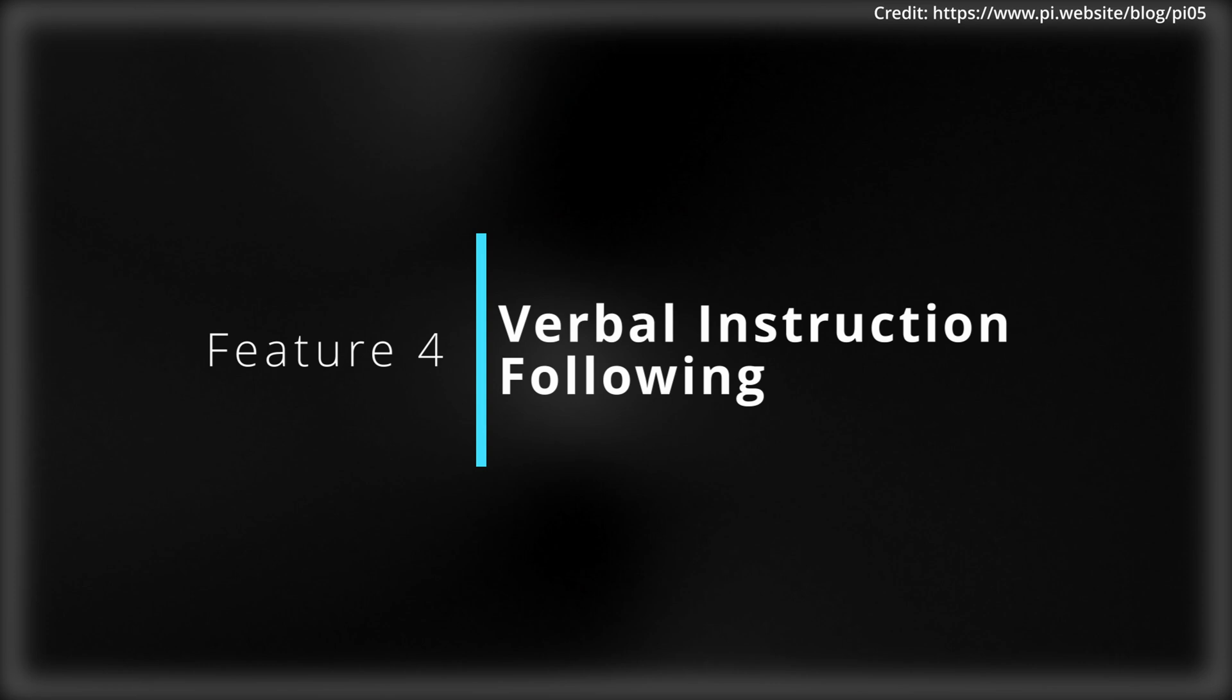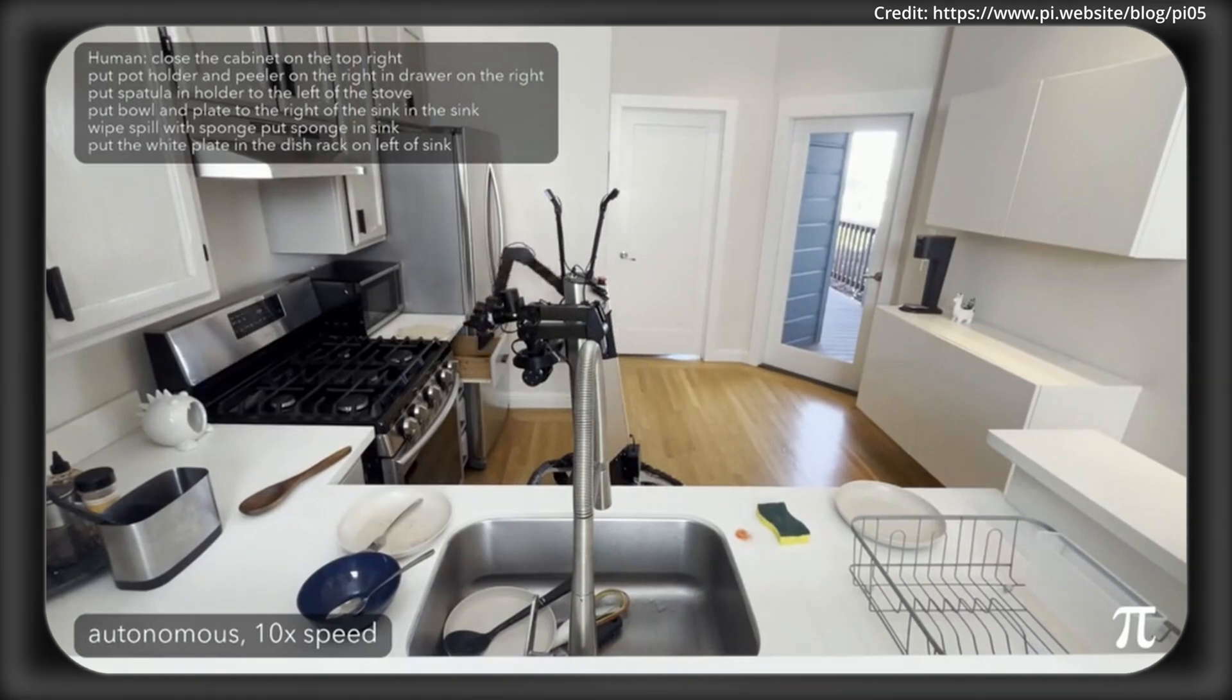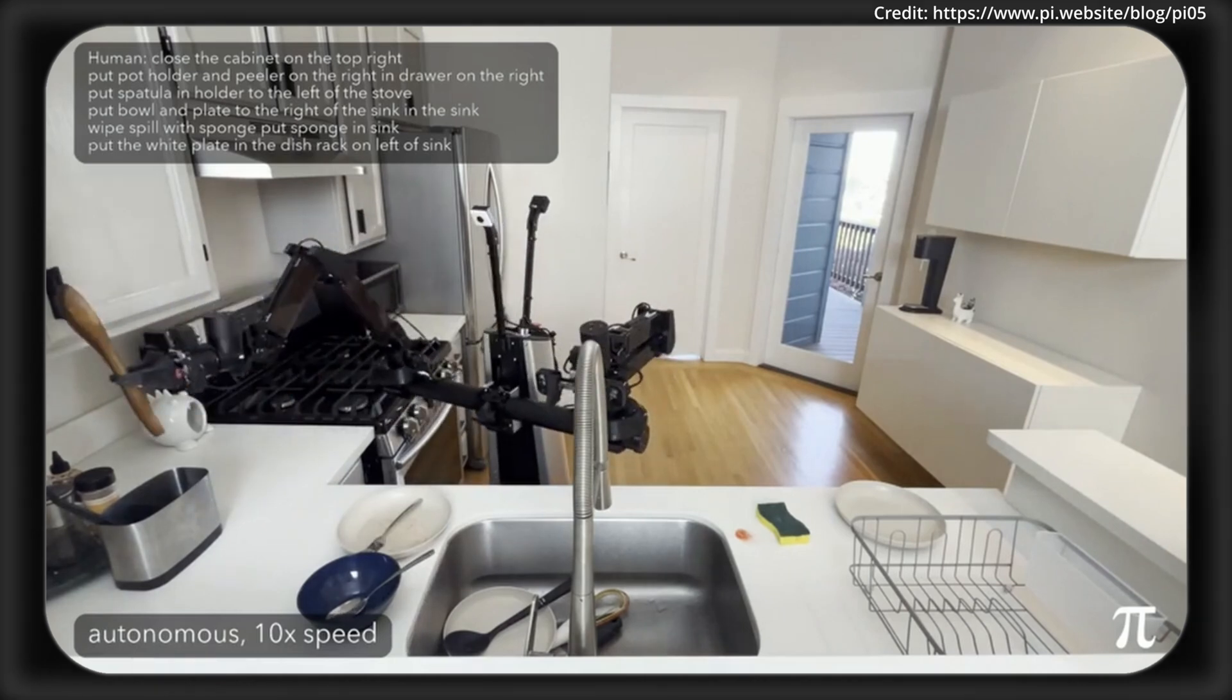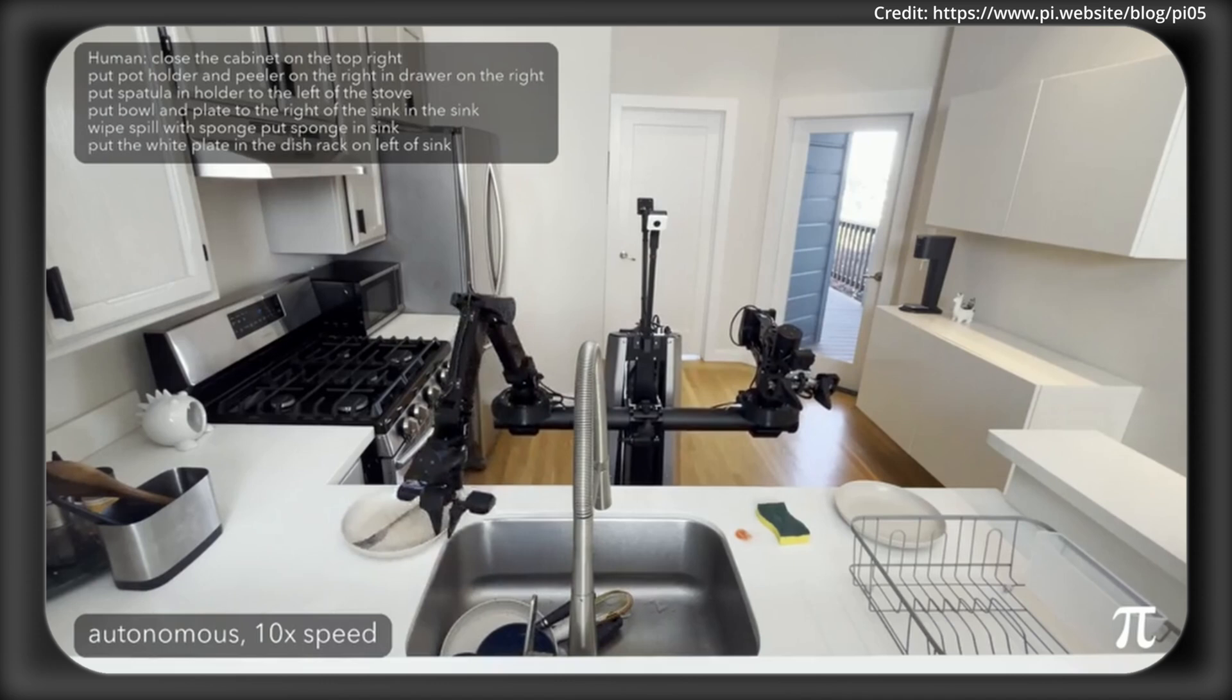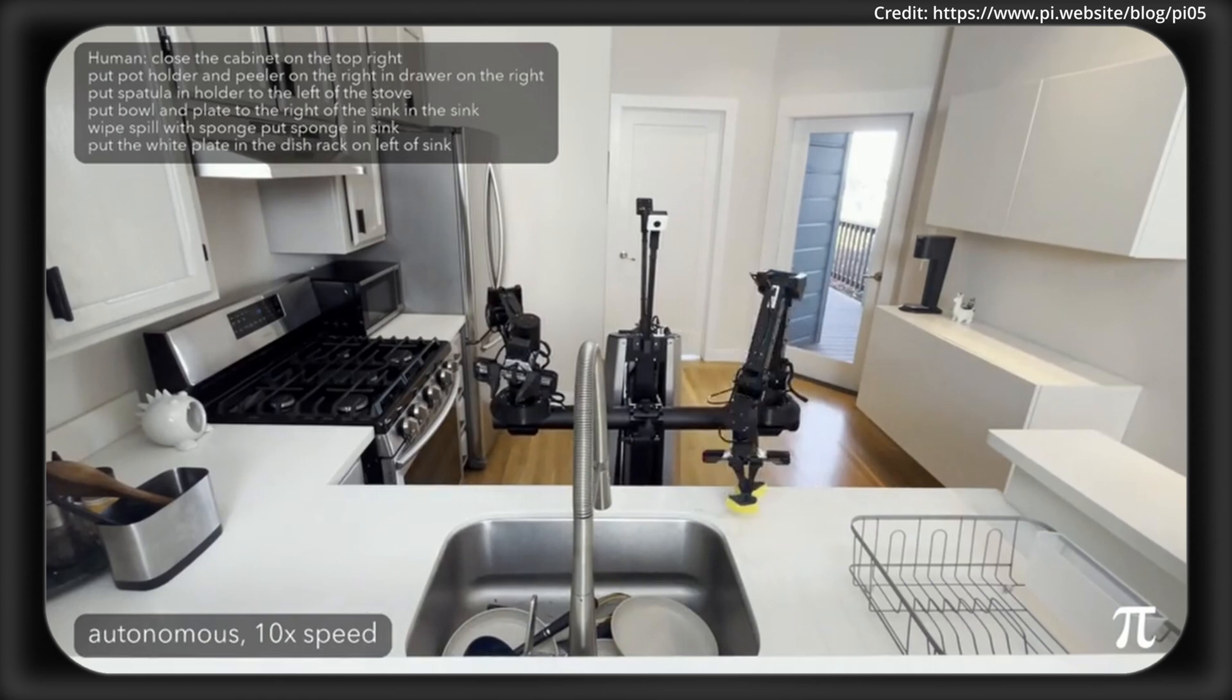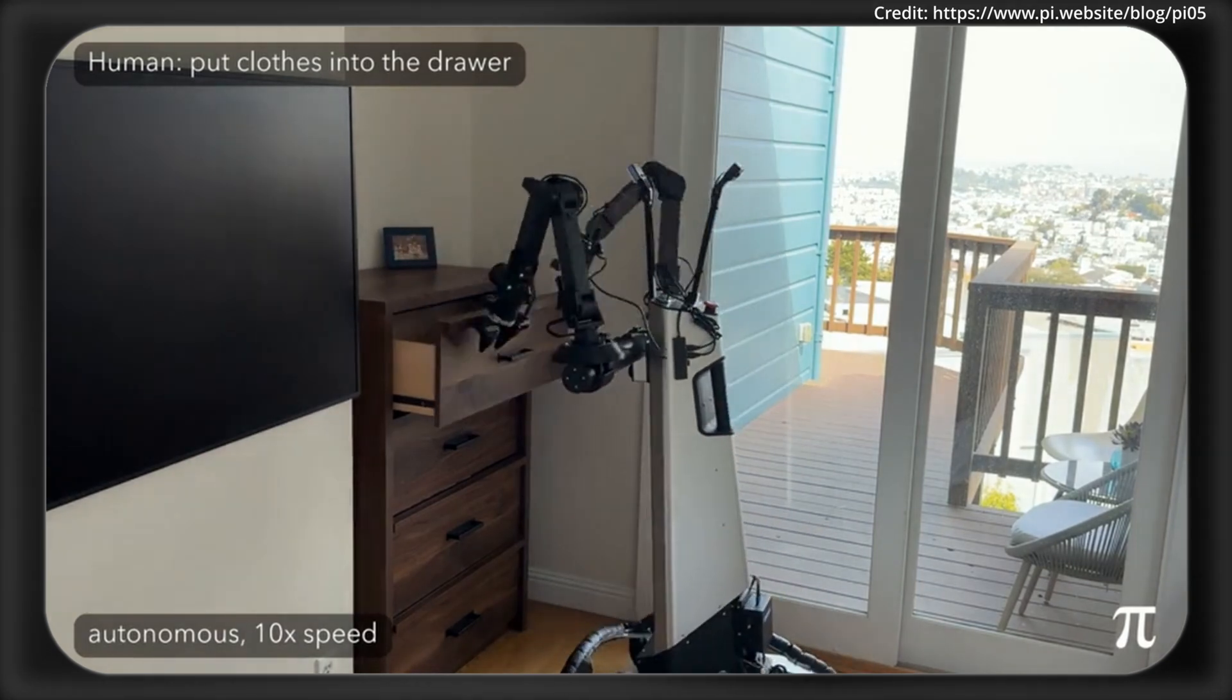But entering feature number four we have verbal instruction following because this wouldn't be very good if you weren't able to actually tell the robot what to do. And this is where Pi.5 allows the robot to listen like it's a roommate and it can handle natural language commands from broad prompts like clean the kitchen to detailed step-by-step prompts like pick up the plate and then put it in the sink. And in tests humans were even able to coach it through tasks step-by-step and it followed along making it user-friendly.